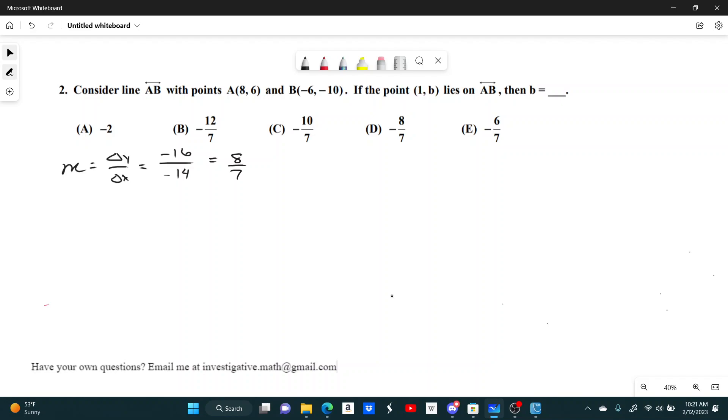From here, I can use the point-slope equation. Y minus Y1 equals M times X minus X1. This is just the point-slope equation. I'll pick A—you can pick A or B, but I'm just going to use A for this question. So my equation will be Y minus 6 equals M, which is 8 sevenths, times X minus 8 right there.